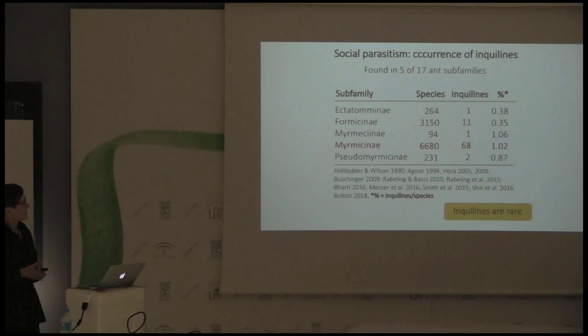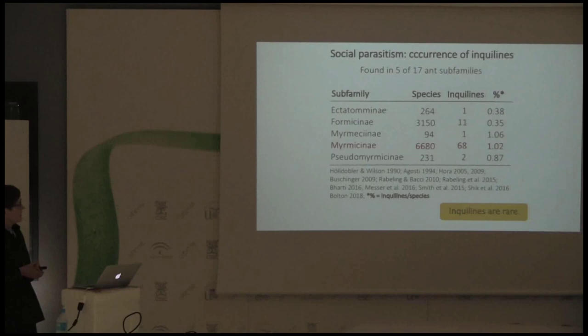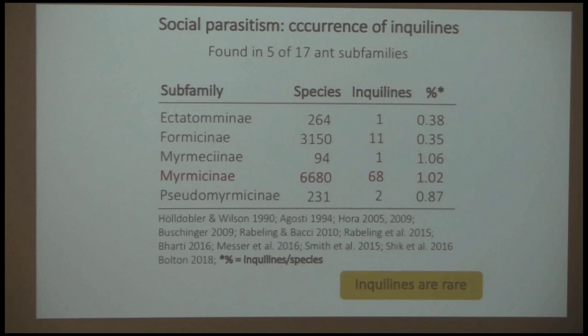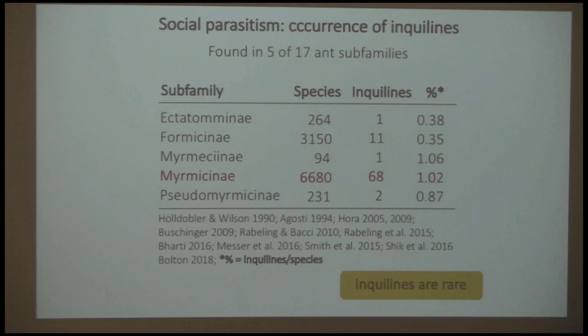Social parasitism is quite rare, particularly inquilinism. Here I have listed five subfamilies, their species numbers, numbers of inquilines found, and the percentage of inquilines relative to total species. As you can see, it's 1% or even less. The myrmicinae is the largest subfamily with nearly 7,000 species and has 68 inquiline species — still a very small percentage. More inquilines will be detected with more work, particularly in the tropics, where recent studies have shown undiscovered species.